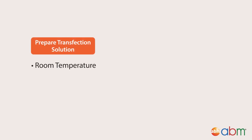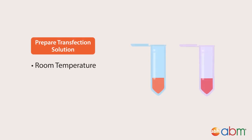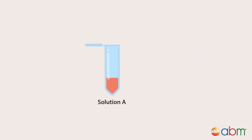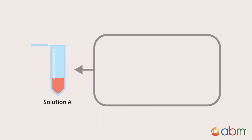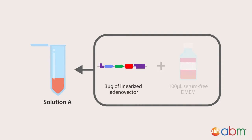At room temperature, prepare two solutions: solution A and solution B. To make solution A, mix 3 micrograms of your linearized adenoviruses and 100 microliters of serum-free DMEM. Incubate for 5 minutes at room temperature.